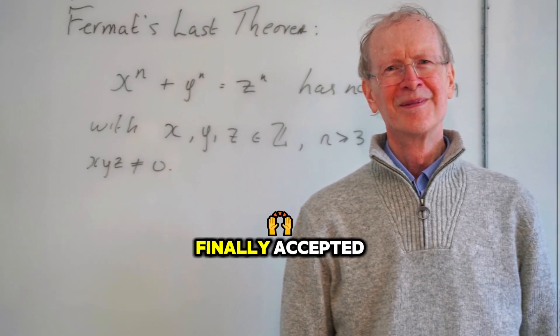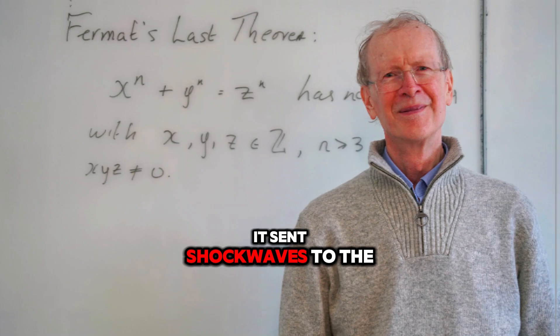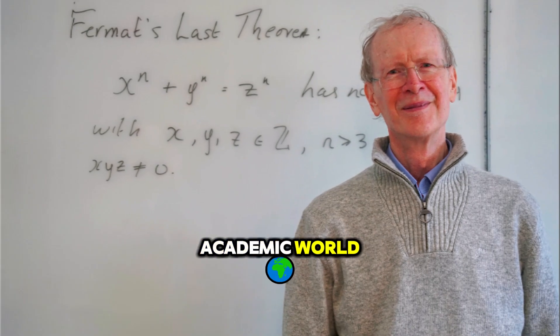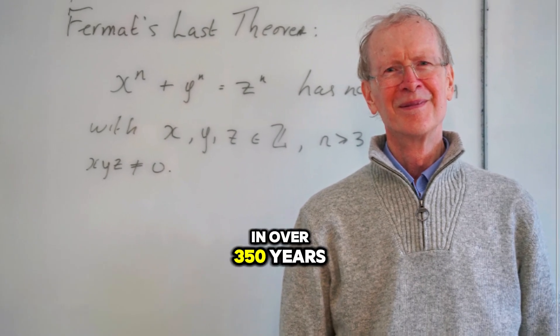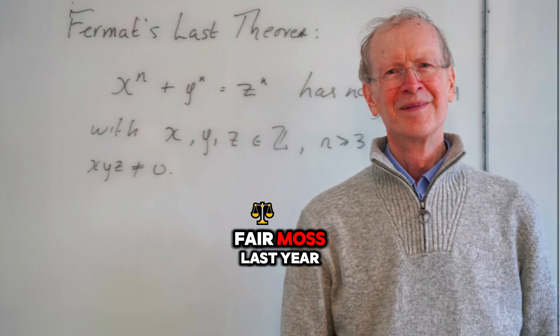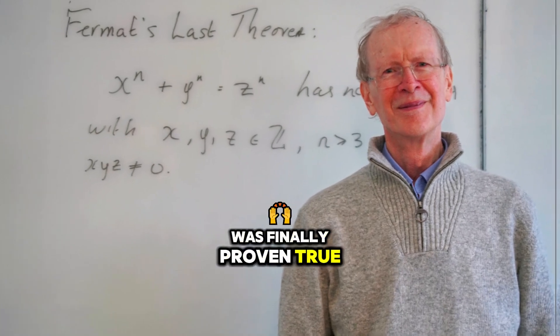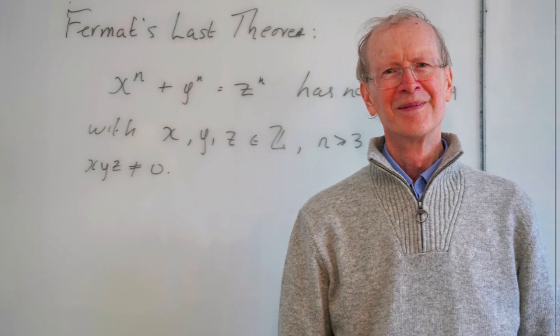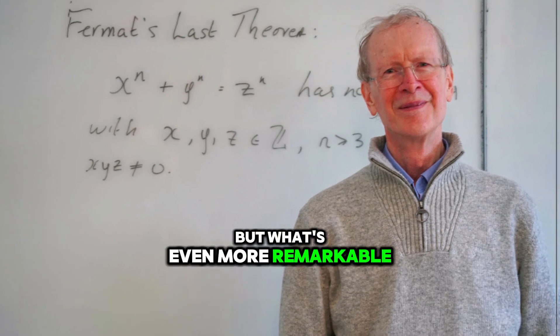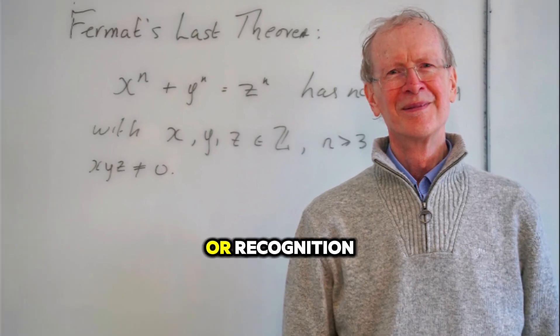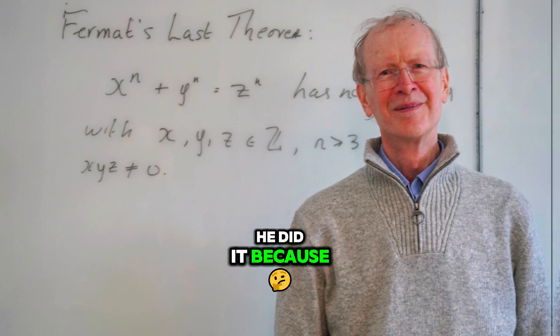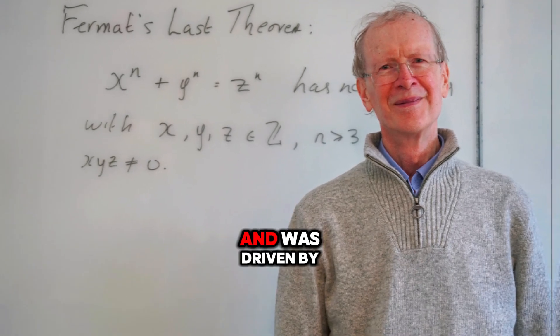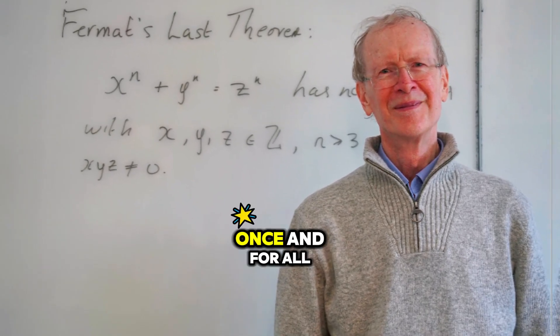When the corrected proof was finally accepted, it sent shockwaves through the academic world. For the first time in over 350 years, Fermat's last theorem was finally proven true. It was a moment of great excitement and celebration. But what's even more remarkable is that Wiles didn't do it for fame or recognition. He did it because he believed in the problem and was driven by the desire to answer it once and for all.